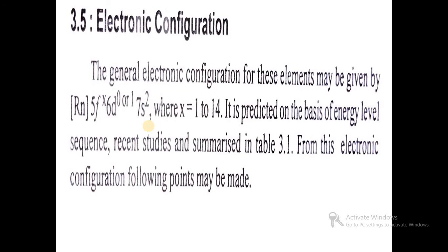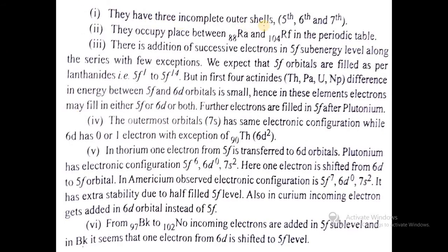The general electronic configuration of these elements is [Rn] 5fx 6d0 to 1 7s2, where x ranges from 1 to 14. It is predicted based on energy level sequence. From the electronic configuration, the following points may be discussed: They have three incomplete outer shells - 5th, 6th, and 7th. They occupy a place between radium (88) and rutherfordium (104) in the periodic table. There is addition of successive electrons in the 5f sub-energy level, but there are some exceptions.